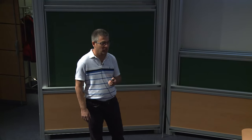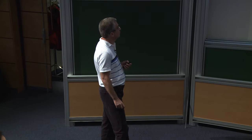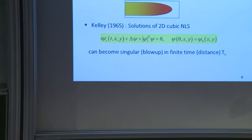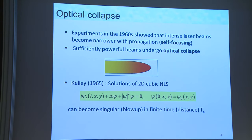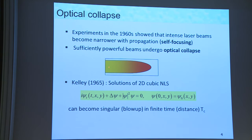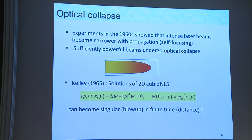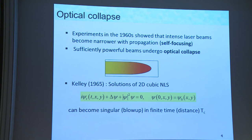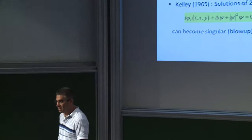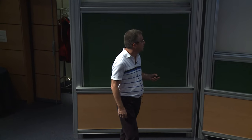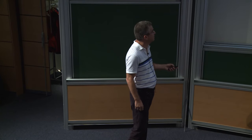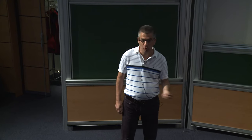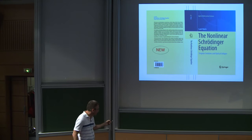We have this competition between the focusing nonlinearity and diffraction. This field started from experiments done in the early 1960s when people had powerful lasers. They shone these powerful lasers into glass and found that after some propagation, the laser beam became so narrow that it damaged the glass — they called this optical collapse or catastrophic collapse. The first explanation was given in 1965 by Kelly, who used the 2D cubic NLS and showed numerically that a solution can blow up in finite time, which physically means finite distance.